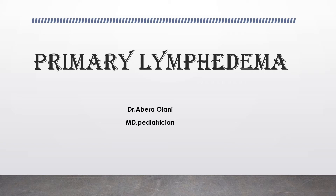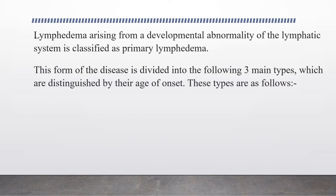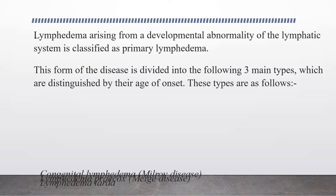Welcome back everyone. Today's lesson is about primary lymphedema. Lymphedema arising from a developmental abnormality of the lymphatic system is classified as primary lymphedema. This form of disease is divided into the following three main types, which are distinguished by their age of onset.